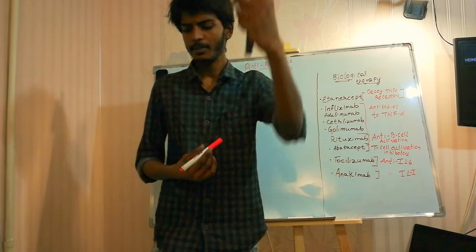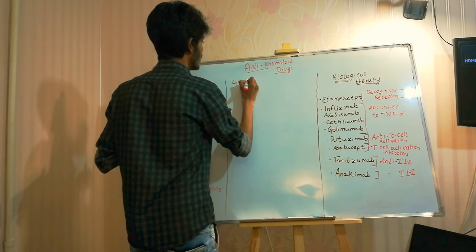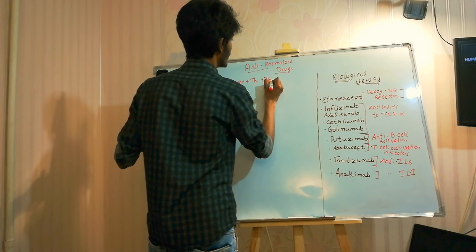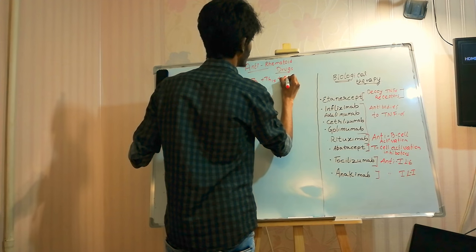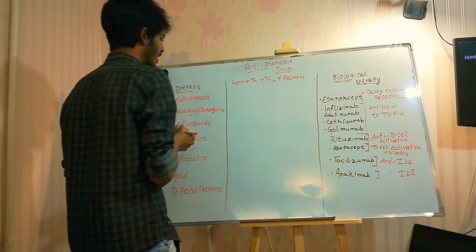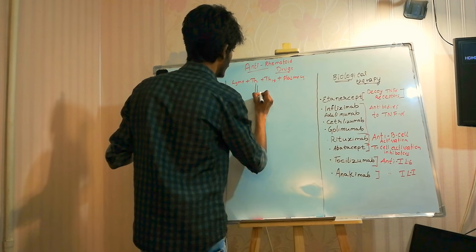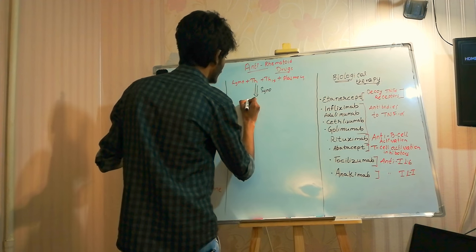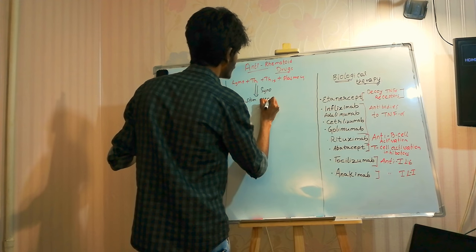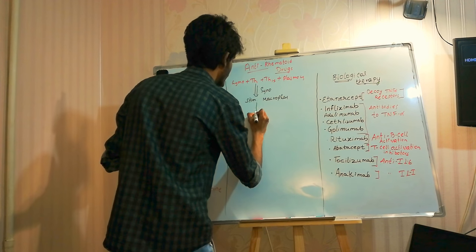During rheumatoid arthritis, we have lymphocytes — cells called TH1, TH17, and plasmacytes. All these cells will infiltrate into the synovial membrane. Once there, they will stimulate the synovial macrophages.